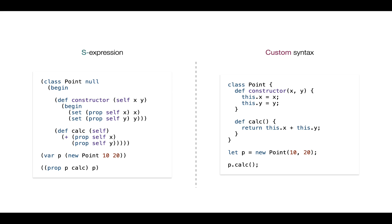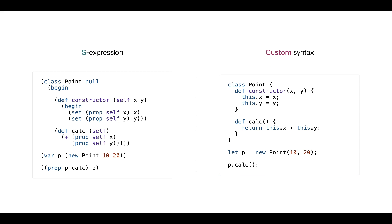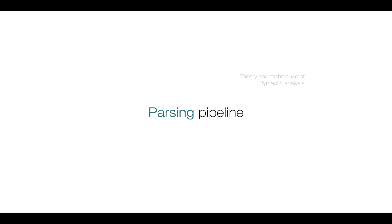However, when it comes to ergonomics, users of your language usually prefer writing something like what is shown on the right-hand side. So in Building a Parser from Scratch, we will take the syntax on the right-hand side and parse it into AST — into abstract syntax tree. With that said, let's start from the parsing pipeline. We'll slightly talk about theory, and already today we'll jump into implementation.